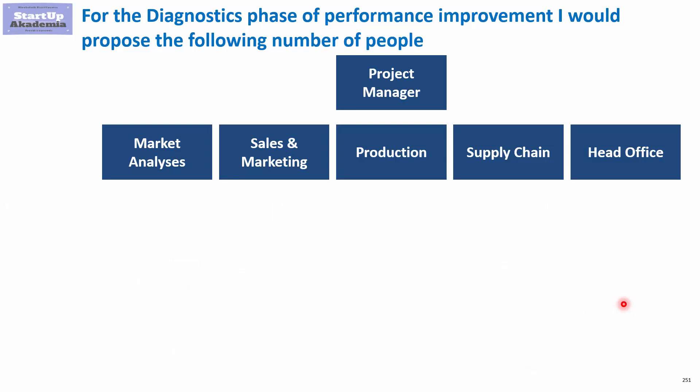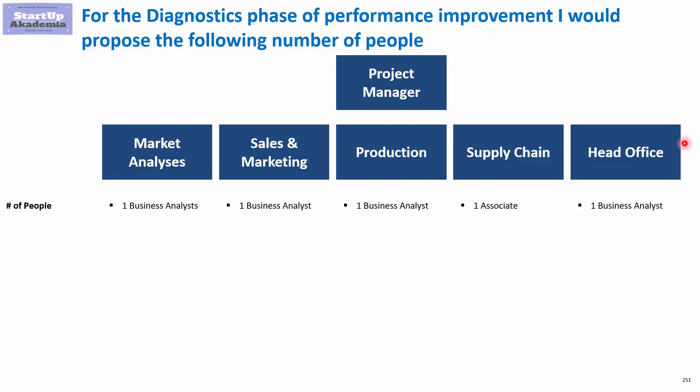In terms of the people you need: one business analyst for market analysis, one for sales and marketing, another one for production. In supply chain it would be better to put an associate — a more experienced person — and one more person for head office. So a team of five plus the project manager should suffice for most FMCG companies. The good thing about FMCG is that they in most cases have very good quality data and plenty of it.